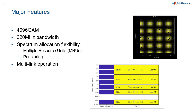Other major features include significant improvements in spectrum allocation, with a new concept of multiple resource units that will be covered in a separate episode, as well as multi-link operation, another groundbreaking feature which also has a dedicated episode. Multi-link operation means that communication between an AP and a station may happen simultaneously over several links, potentially increasing the throughput and decreasing the latency.